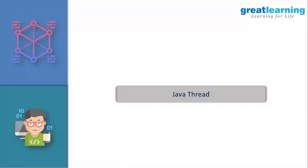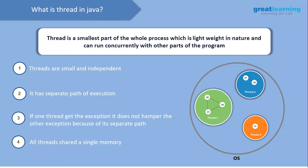Now we'll see Java threads. A thread is the smallest part of a process — it is lightweight in nature and can run concurrently with other parts of the program. Threads are small and independent with separate paths of execution. If one thread gets an exception, it does not affect other threads because of their separate paths. All threads share a single memory, which makes thread usage cost-effective.